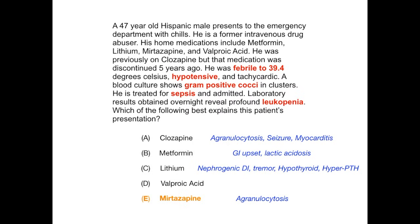Choice D is valproic acid, which has three classic high-yield side effects. First, transaminitis — an elevation in ALT and AST — which is not mentioned in this vignette. Second, thrombocytopenia, a decreased platelet count with stigmata of bleeding, also absent here. Third, neural tube defects — so if a pregnant patient on valproic acid has an abnormal ultrasound or prenatal finding, valproic acid could be the answer. But valproic acid is not commonly associated with agranulocytosis for the purposes of USMLE and COMLEX, so D is incorrect.